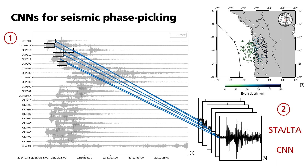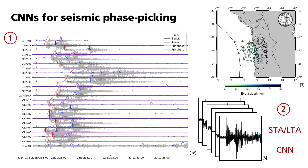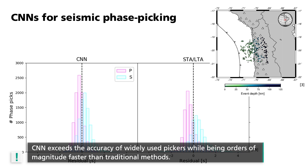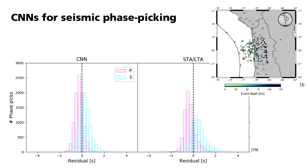This is the result of the CNN picking. They used each set of picks to perform a 1D relocalization of the seismic events. The more accurate the picks are, the smaller the standard deviations of the travel time residuals are expected to be. The figure shows those standard deviations for the CNN picks on the left and those achieved by STA-LTA on the right. The overall residual distribution is broader for STA-LTA picks and narrower for CNN, especially for S wave picks. This indicates that CNN outperforms STA-LTA and exceeds the accuracy of widely used pickers while being orders of magnitude faster than traditional methods. Thus, classified seismological data from earthquake catalogs are a perfect application for supervised learning-based algorithms such as a CNN.